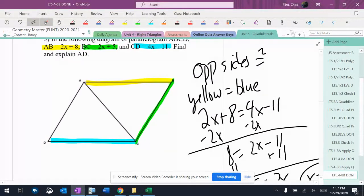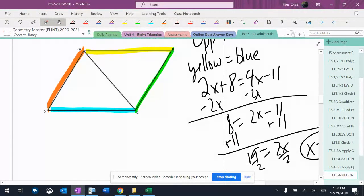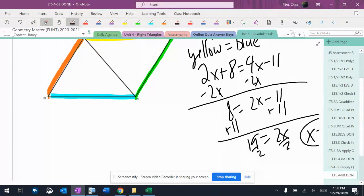So what am I supposed to do with that? It wants to know AD. All right, well, AD is over here. And again, opposite sides are congruent. So orange is equal to green.